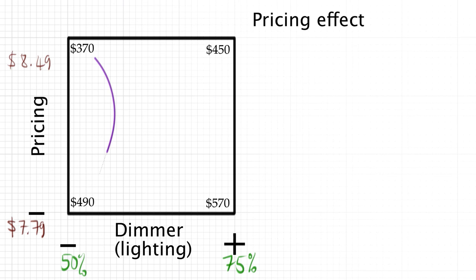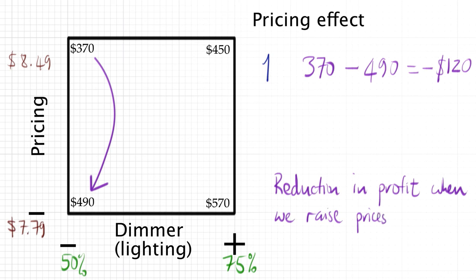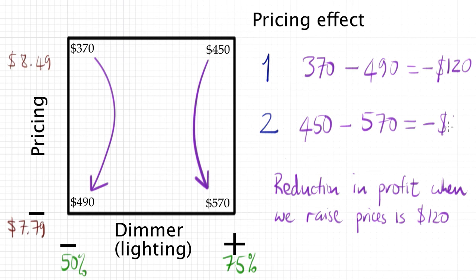Now let's consider the effect of adjusting prices. At low amounts of light, we can compare $370 in profit to $490 in profit. We interpret this as follows: as prices are increased, the profit will in fact decrease by $120. We can also consider the effect of adjusting prices at high levels of lighting. This time we have 450 minus 570, that's a decrease of $120 again.